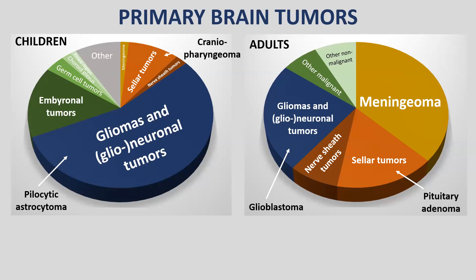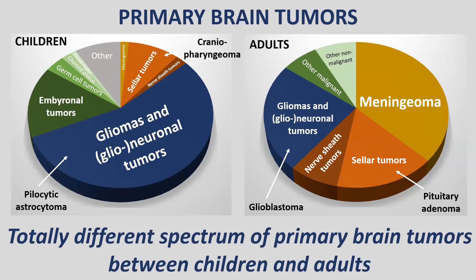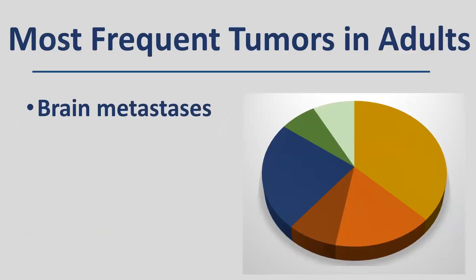Looking at the distribution of primary brain tumours in children and adults — the colours and distributions are totally different between the two groups. The spectrum of primary brain tumours in children is completely different from that in adults. You just need to know the patient's age and the five most frequent tumours in that age group to already have a very good differential diagnosis without having looked at the images.